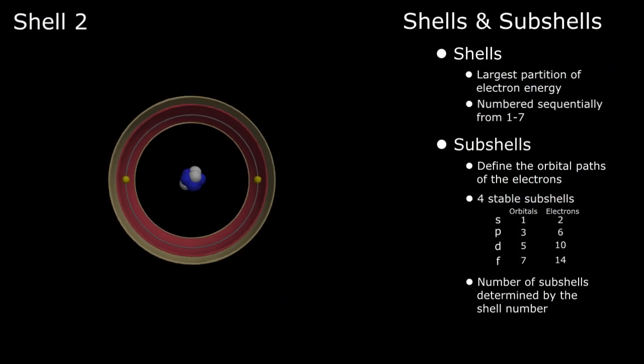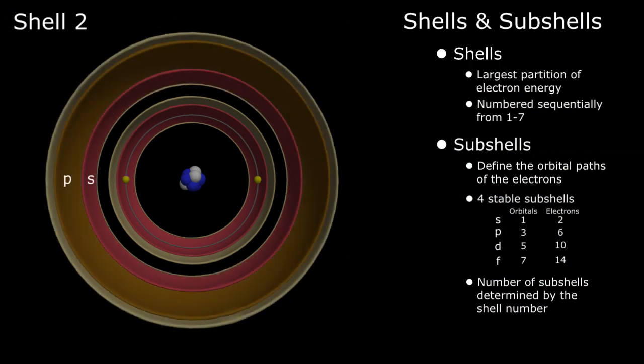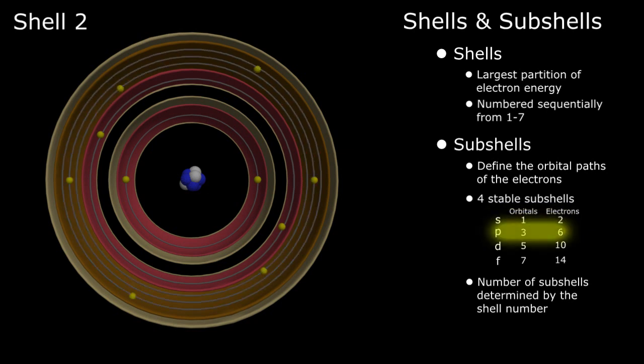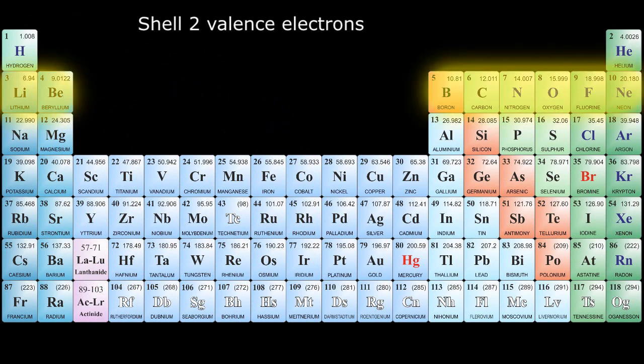Moving on to shell 2, since the shell number determines the number of subshells, shell 2 will have two subshells, S and P. Just like in shell 1, the S subshell has a single orbital which can hold a maximum of two electrons. However, the P shell has three orbitals, each of which can hold two electrons for a total of six. Shell 2 is now complete with a total of eight electrons. Shell 2 describes the valence electrons of the second row of elements on the periodic table, from lithium to neon.